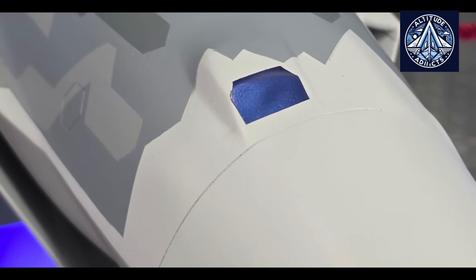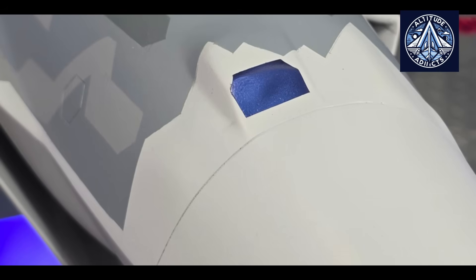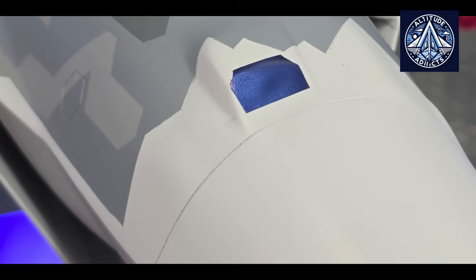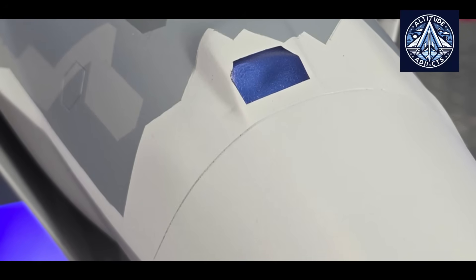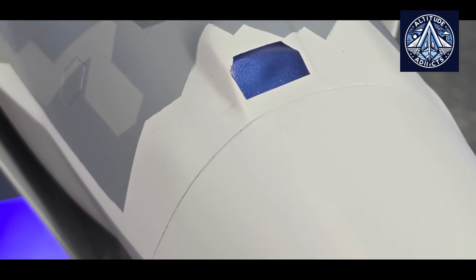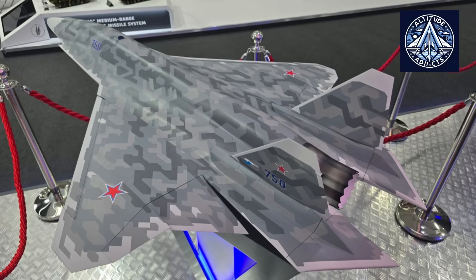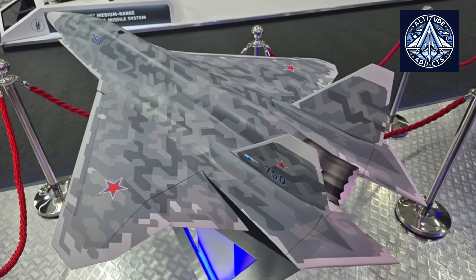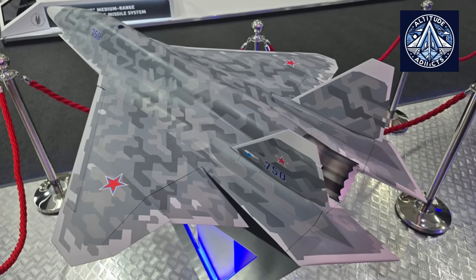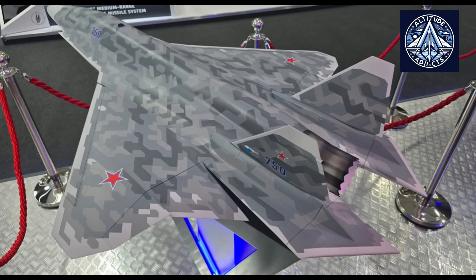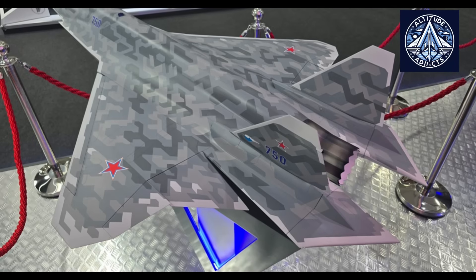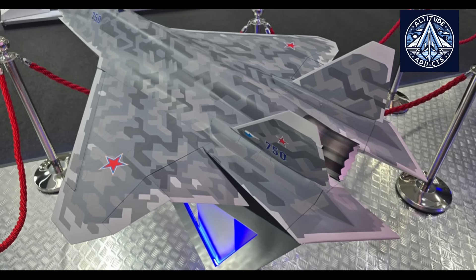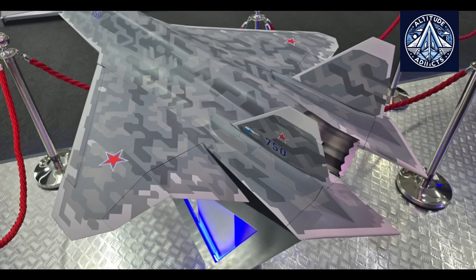To fully understand the potential development of the unmanned Su-75, it is necessary to examine the principles inherited from the original piloted design. The Su-75 was conceived as a cost-effective, lightweight stealth fighter whose primary advantages included a single high-performance engine, a reduced radar cross-section, modular avionics, and a spacious internal weapons compartment large enough to carry several thousand kilograms of ordnance.